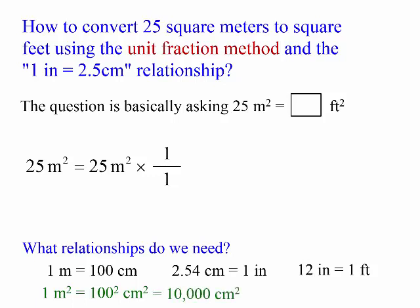One meter square equals 100 centimeter square, which equals 10,000 centimeter square. 100 square centimeter square over 1 meter square is essentially one. That's why this is called the unit square method.